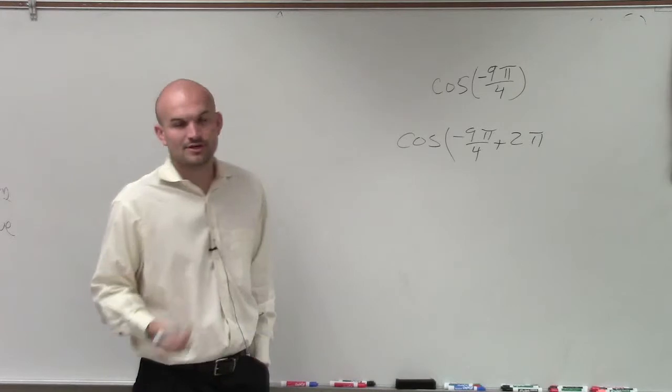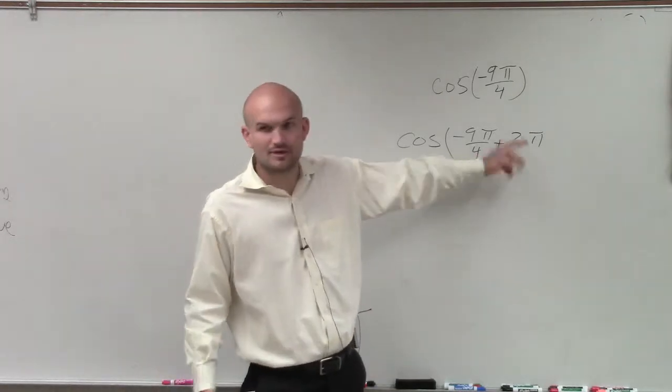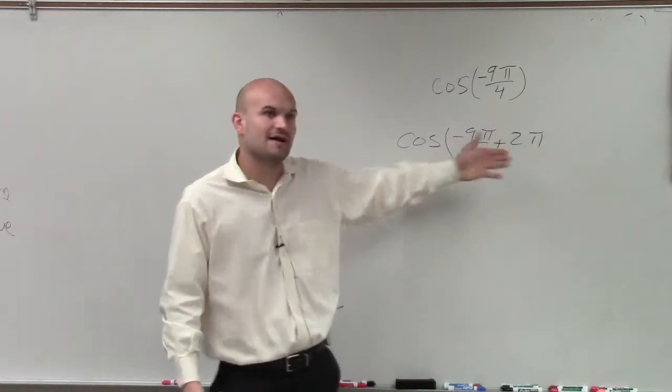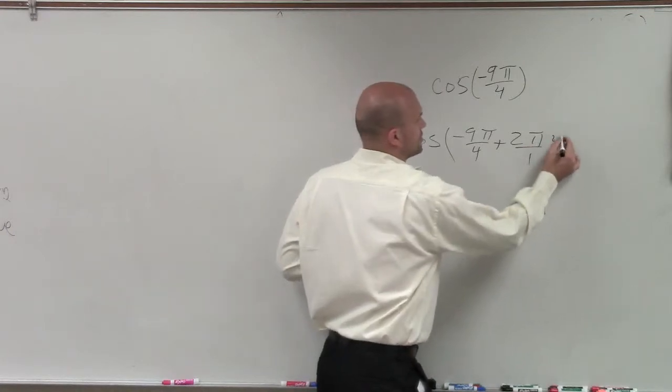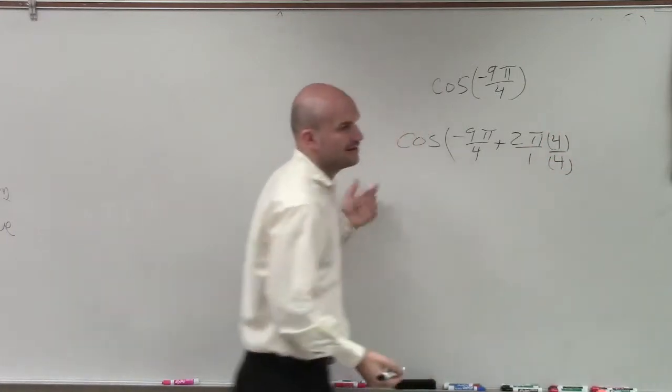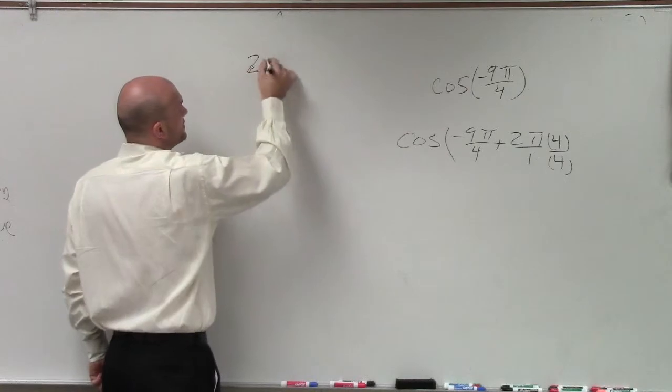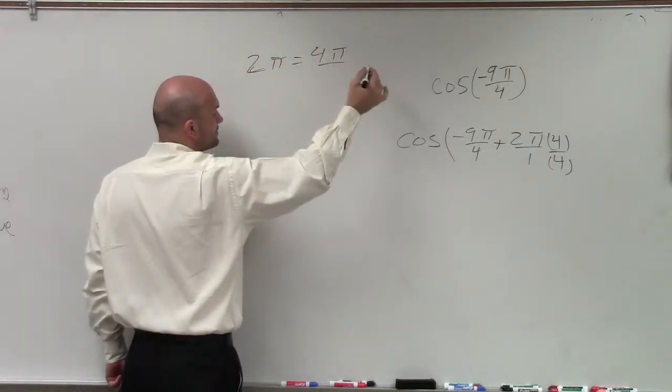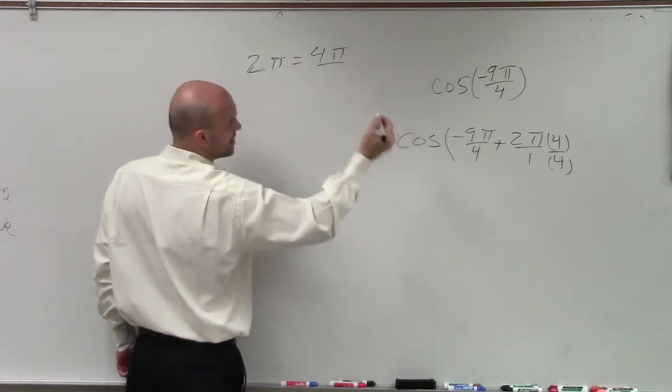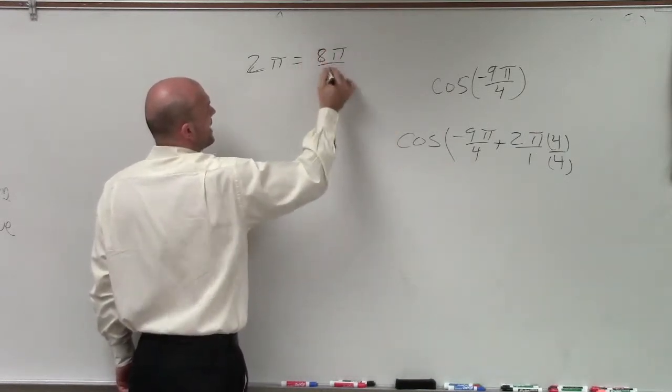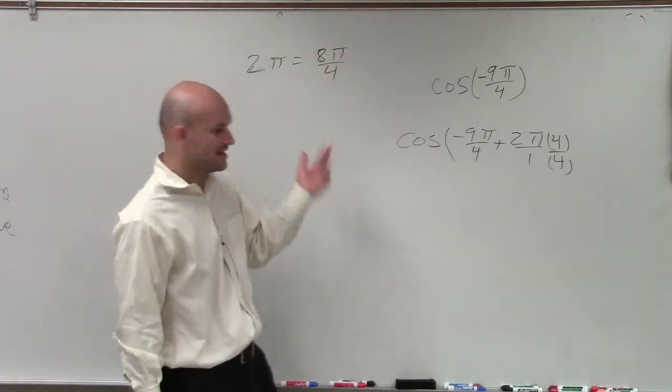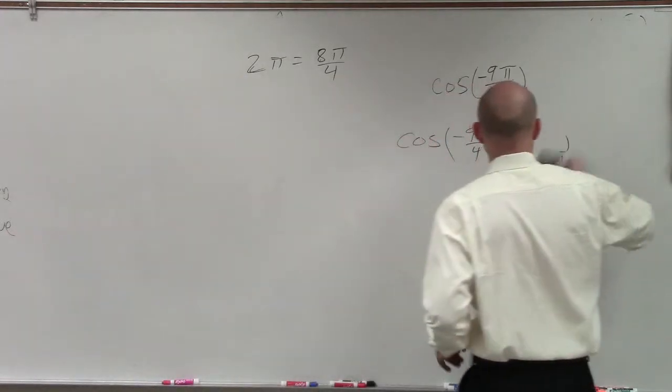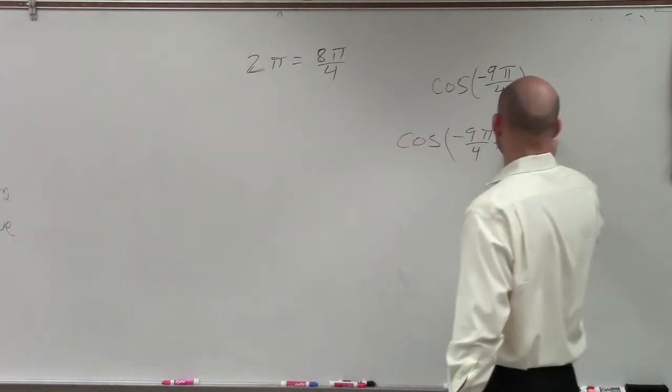Now again, guys, when you're adding 2 pi, when you're adding a fraction to a whole number, you have to have common denominators. So you can multiply by 4 over 4. Or you guys can just go on with the understanding that 2 pi is the same thing as 8 pi over 4. It's the same thing. So let's add 8 pi over 4.